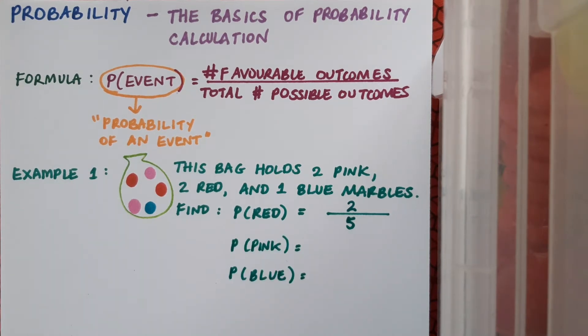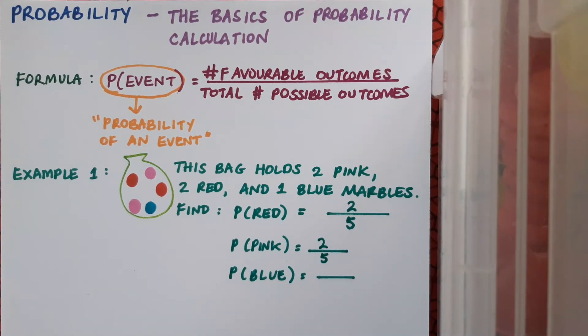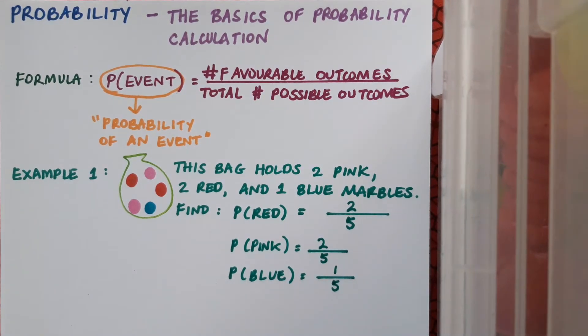Take a moment yourself to write down the probability of selecting a pink marble randomly from the bag, and then separately the probability of selecting a blue marble from the bag. Pause the video and do that. They'll both be fractions. Pink is two over five and blue is one over five.